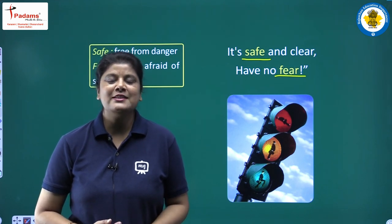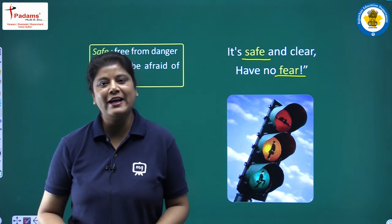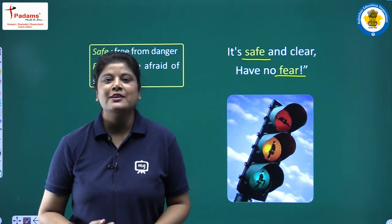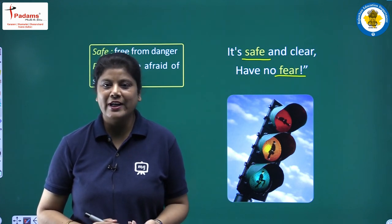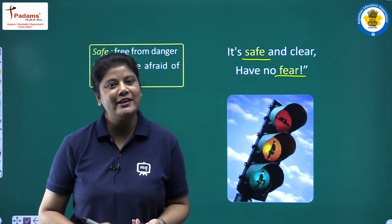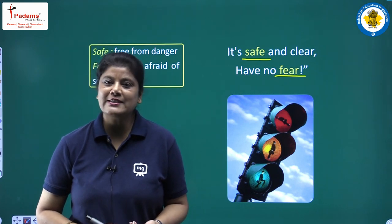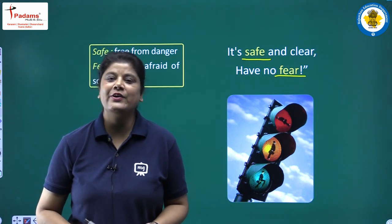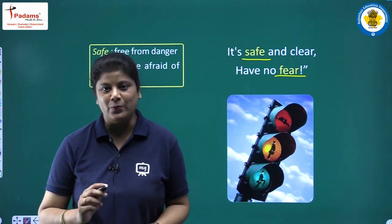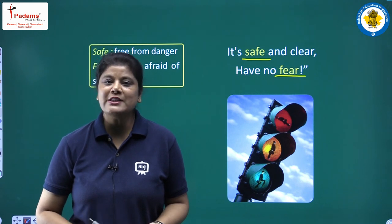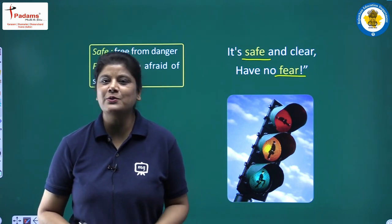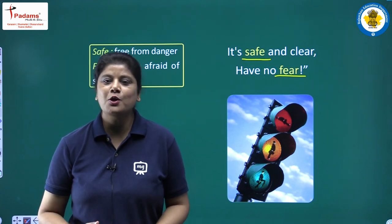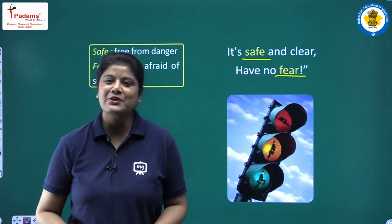So students, that was your poem about traffic lights. What did you learn from this? Traffic lights have three colors — red, orange and green. Red light says to stop, orange says to wait, and green light says go. You must follow all the traffic rules. That was your chapter Traffic Lights. Hope you all understood it. Thank you and have a good day.